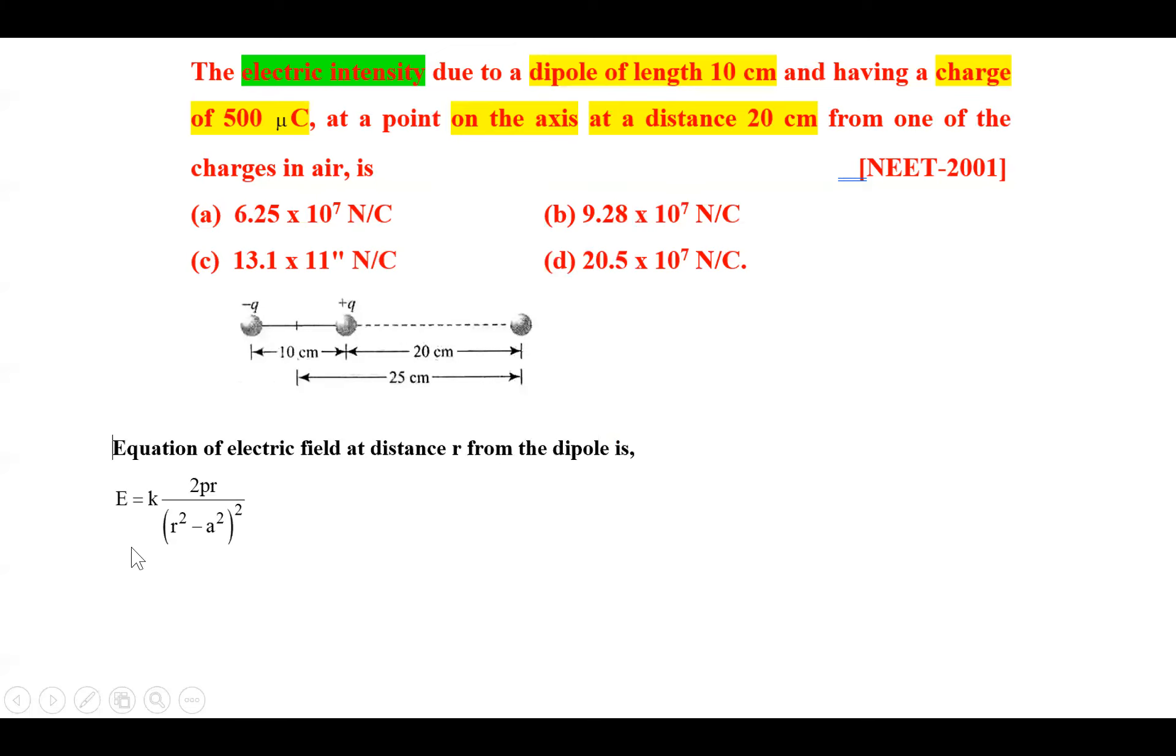We have the equation for the electric field intensity at any point on the axis of the dipole. That is E = k(2pr)/(r² - a²)².